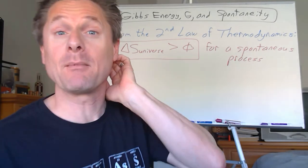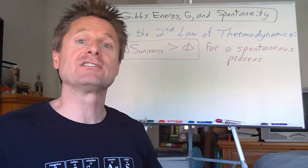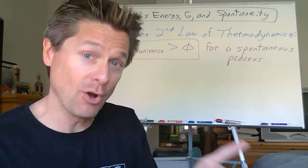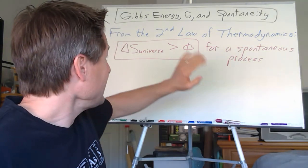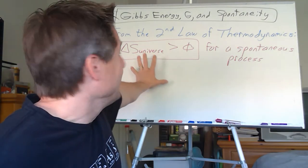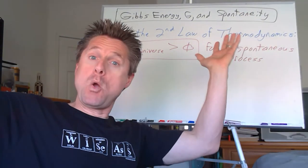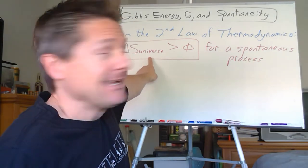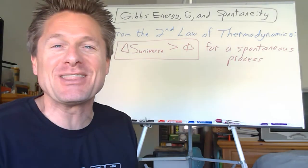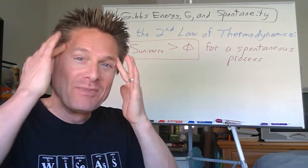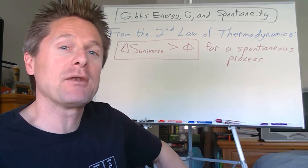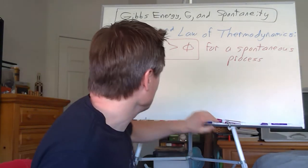Let's start with the second law of thermodynamics. That's a key one because it's a direct requirement for spontaneity. Remember, if you need to go back and review the first, second, and third law — for a spontaneous process, this is the requirement: the entropy of the universe must increase. Easy peasy, right? Good luck calculating that. How are you going to calculate the change in entropy of the universe? Not going to happen. Our little human brains can't do that, so let's break this down into pieces and get it into something we can actually work with.